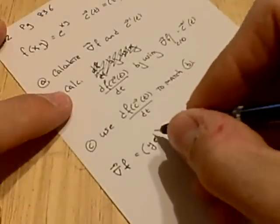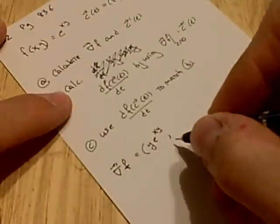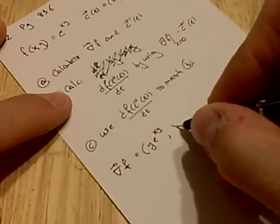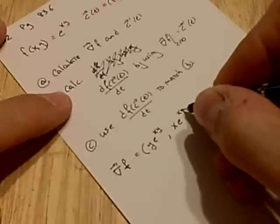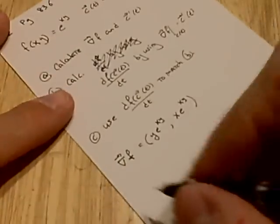will give you y e to the xy. And then the partial with respect to y gives you x e to the xy. So that's the gradient.